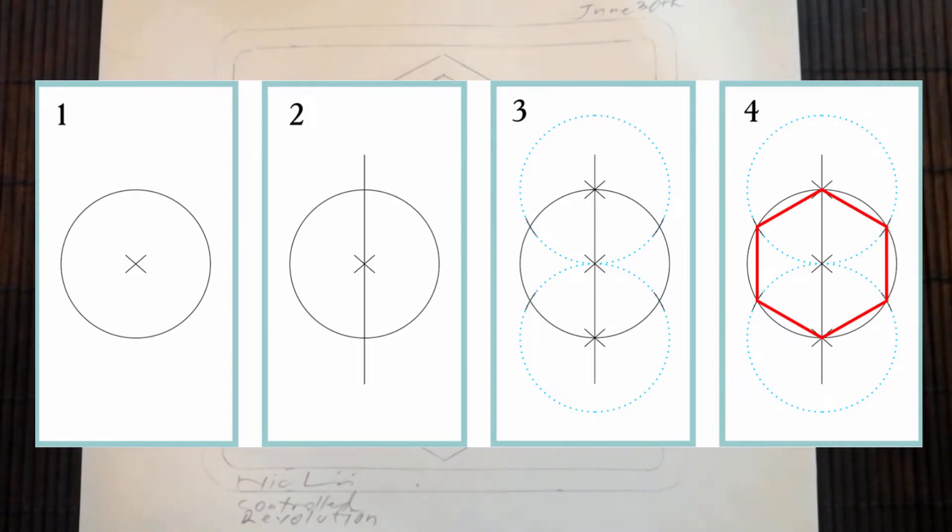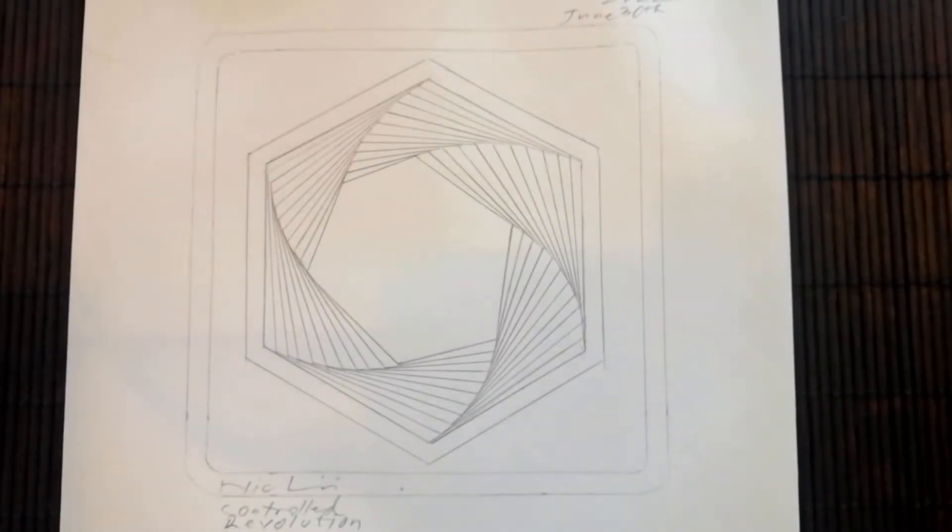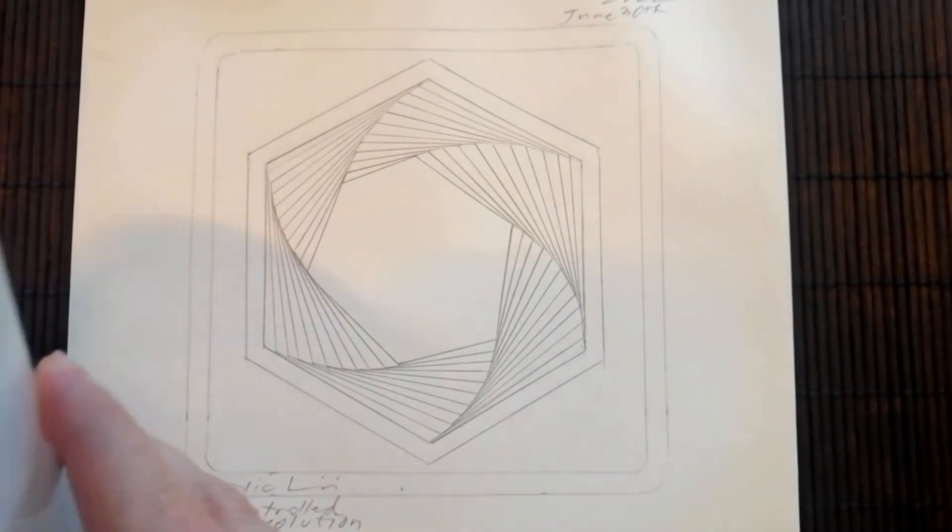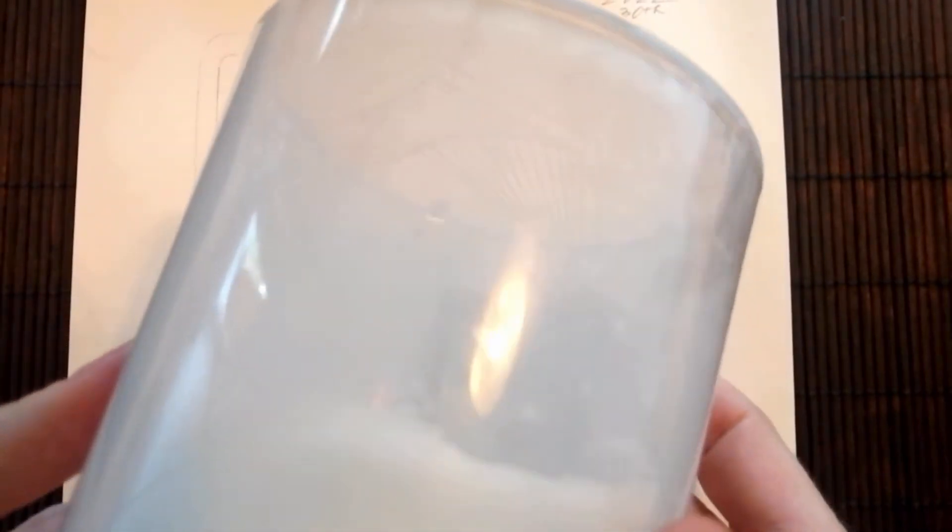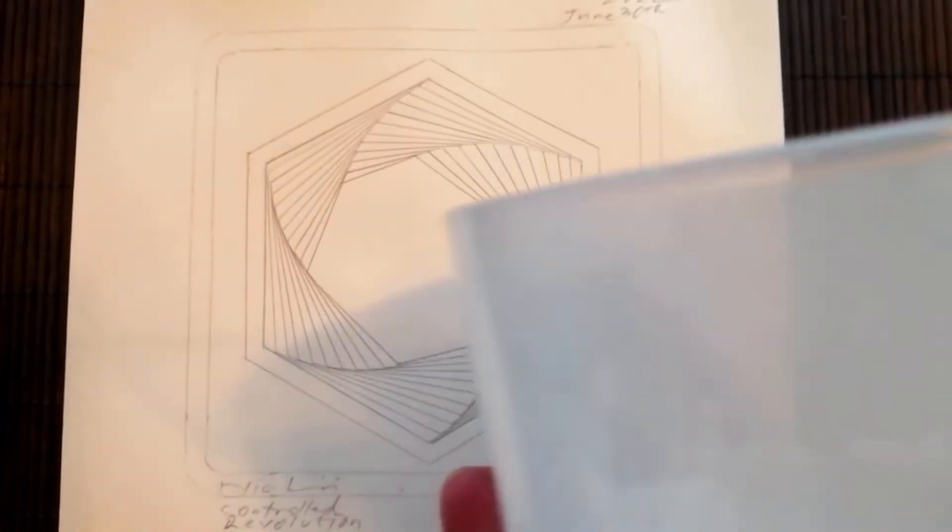If you're like me, you don't have a compass at hand. Simply look for a round object that has a good size so you can draw the regular circles which we need in order to make the hexagon.